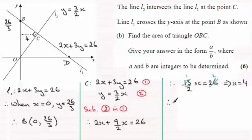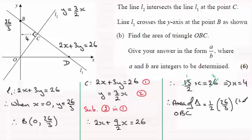So therefore, I can do the area of the triangle. Area of triangle, let's just say OBC. Well, that's going to equal half the base. I'm taking the base then as OB. So that's half of 26 over 3 times what would be the height, which would be 4.